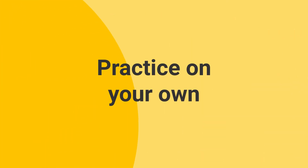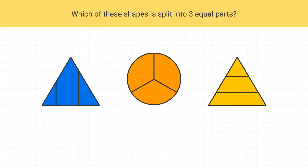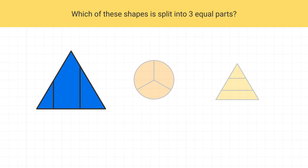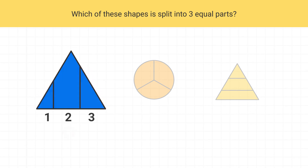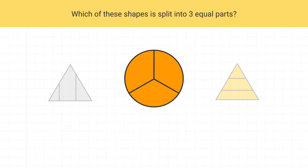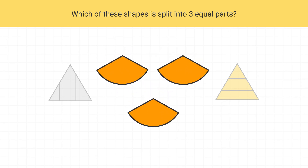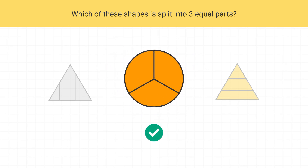Now it's your turn to practice. Which of these shapes is split into three equal parts? We can see that this first shape is split into three parts, but the parts are not all the same size. So this shape is not split into three equal parts. The second shape is split into one, two, three parts, and they do all seem to be the same size. So this shape is split into three equal parts.